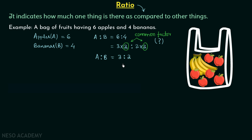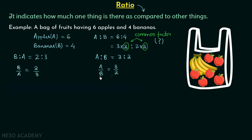Now there is one more way to represent ratio. We can write A ratio B as A by B, and this will be equal to 3 by 2. Now what if I want to compare the number of bananas with the number of apples? I will say B ratio A equal to 4 ratio 6 — removing the common factor we will have 2 ratio 3, or we can write B over A equal to 2 over 3. So ratio is nothing but the comparison of similar things, and for comparison we must have more than one thing.